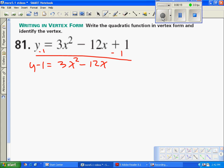That leading coefficient has got to go, so let's factor it out. Y minus 1 equals 3 times x squared minus 4x plus, and let's set it up so we're ready to complete the square.